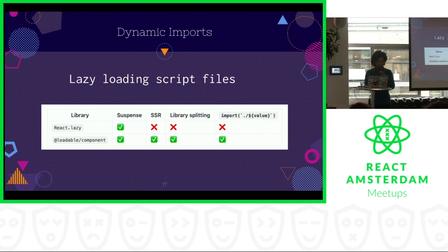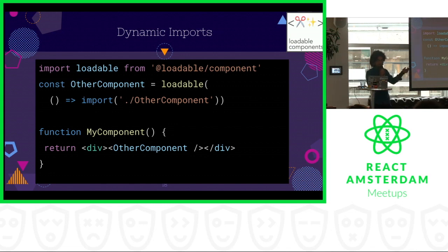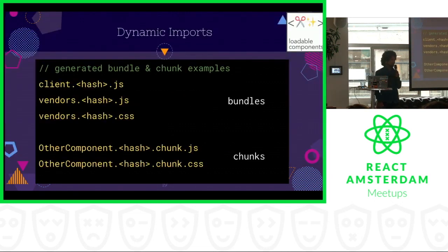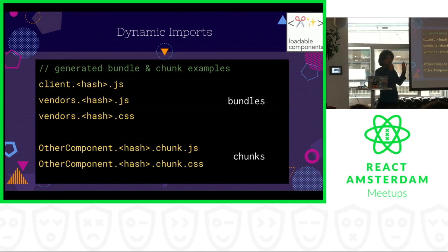Let's look at some code. Imagine you have a component called OtherComponent and you want to include it. What you'd first do is wrap it around loadable and then use a dynamic import, and then call it in your component. When you do this, the files generated include client JS, vendor JS, vendor CSS, and also OtherComponent.chunk.js and OtherComponent.chunk.css. We have two classes of files: bundles and chunks. Chunks correspond to files that are dynamically imported, while bundles are the ones you statically declare as entry points.